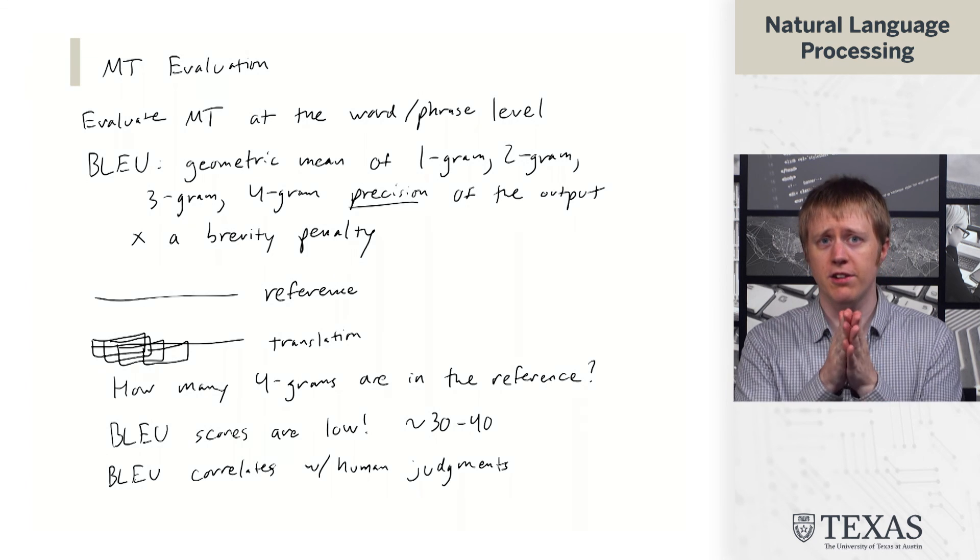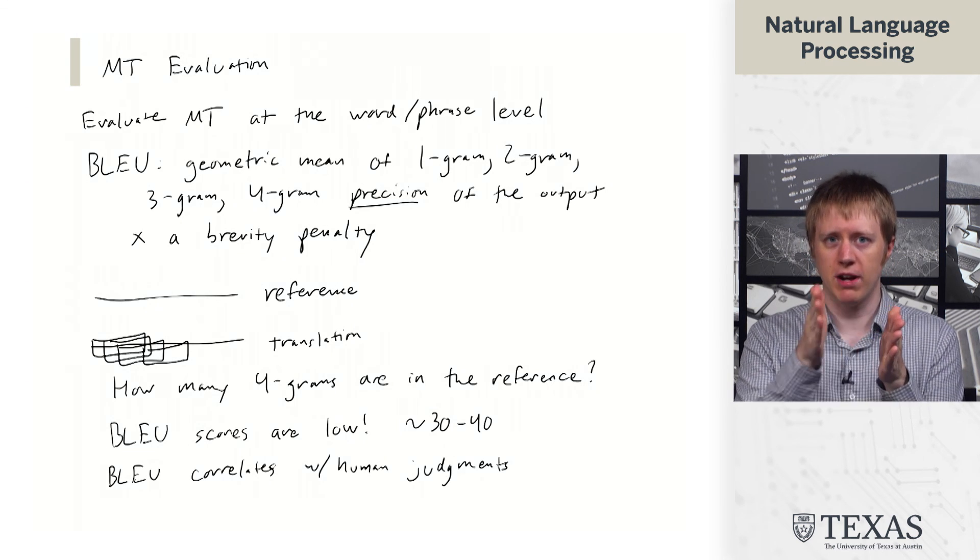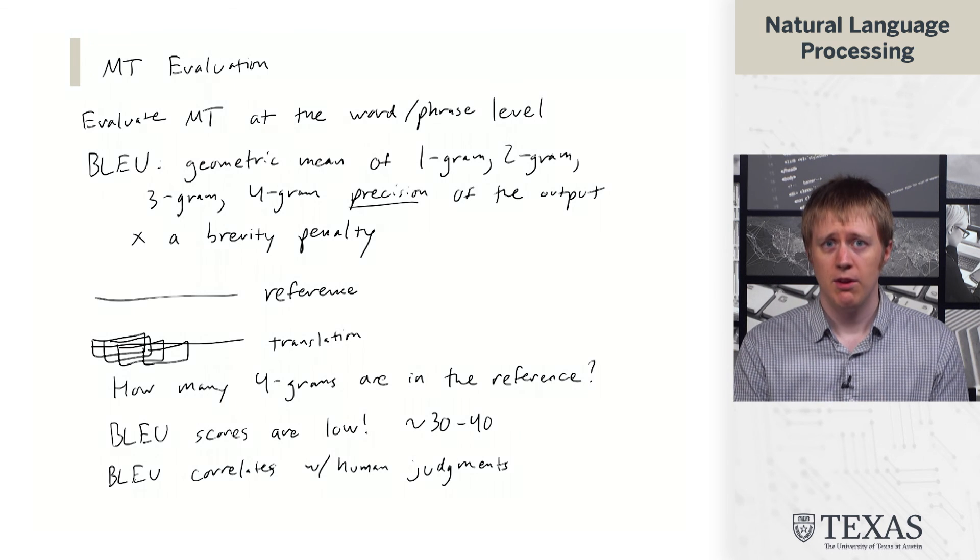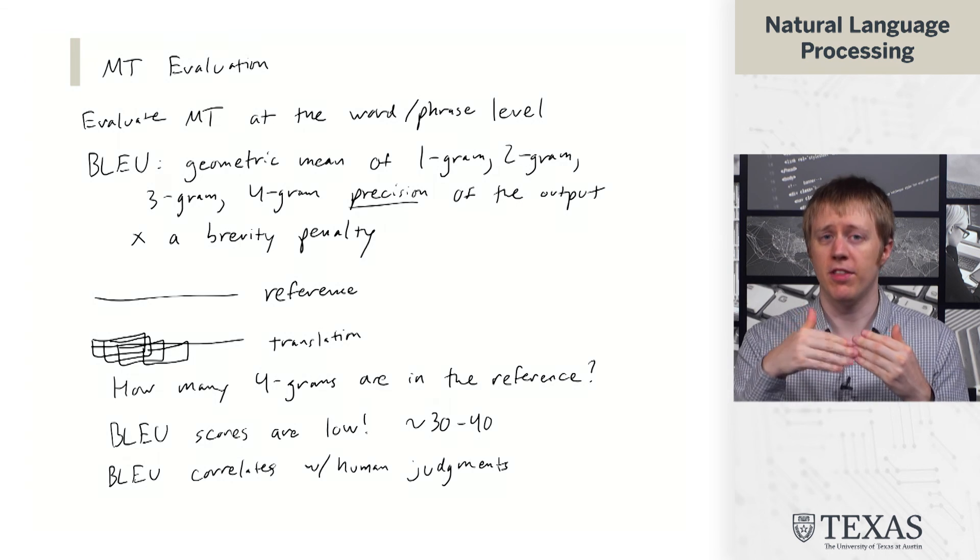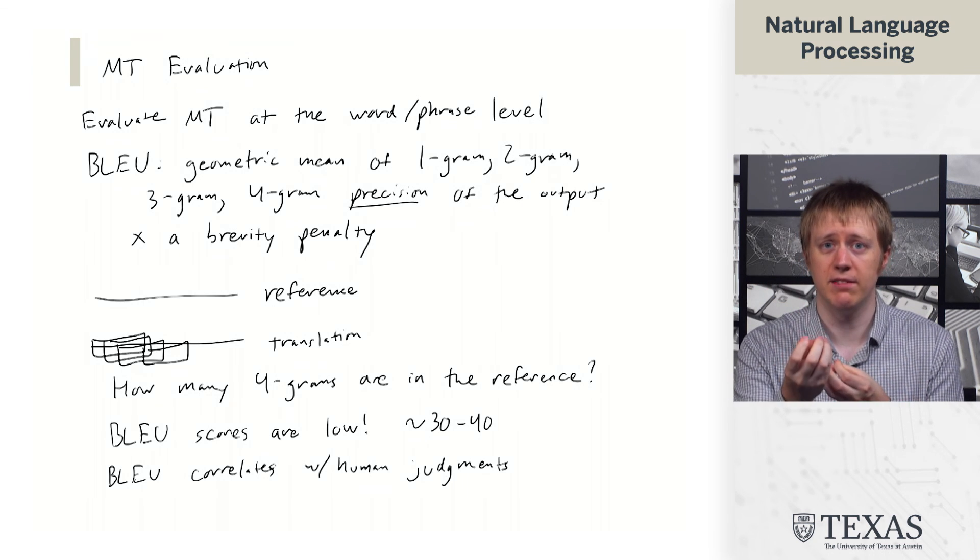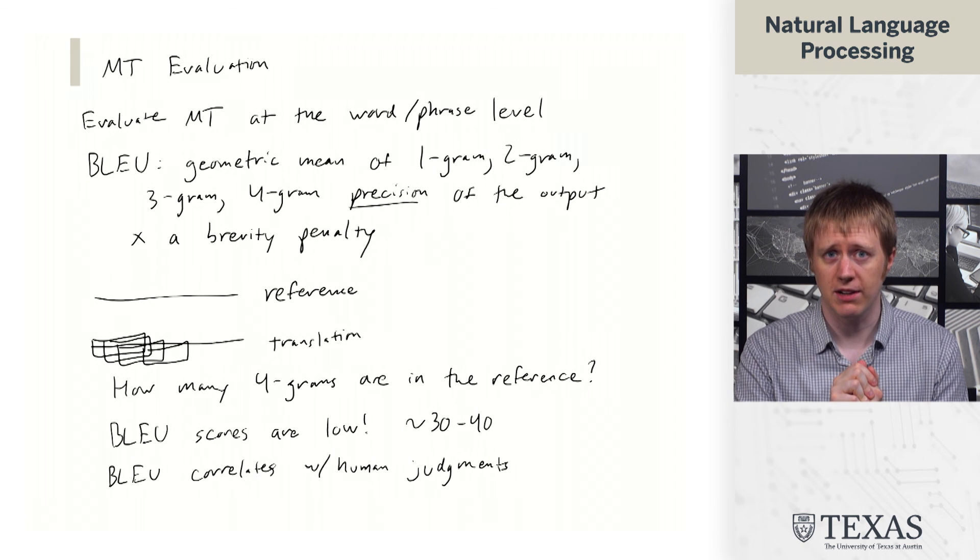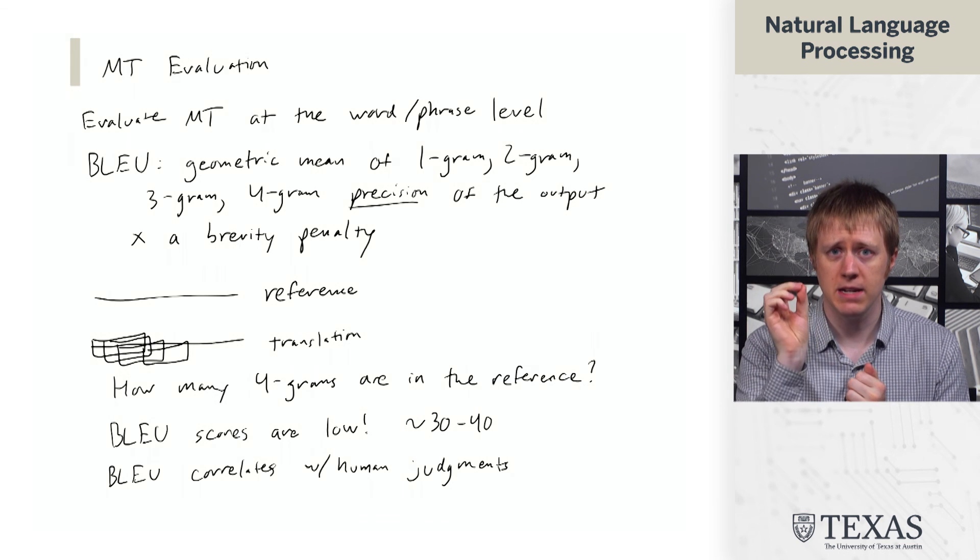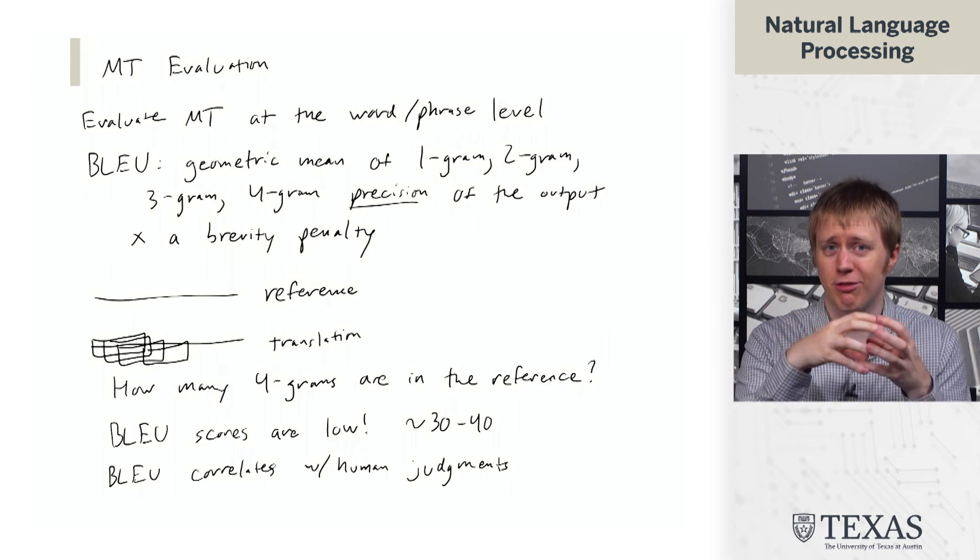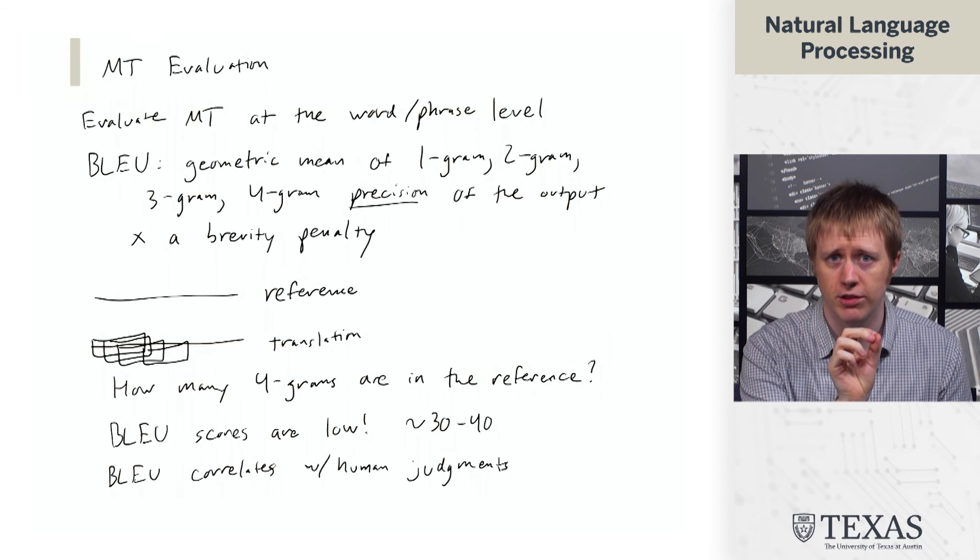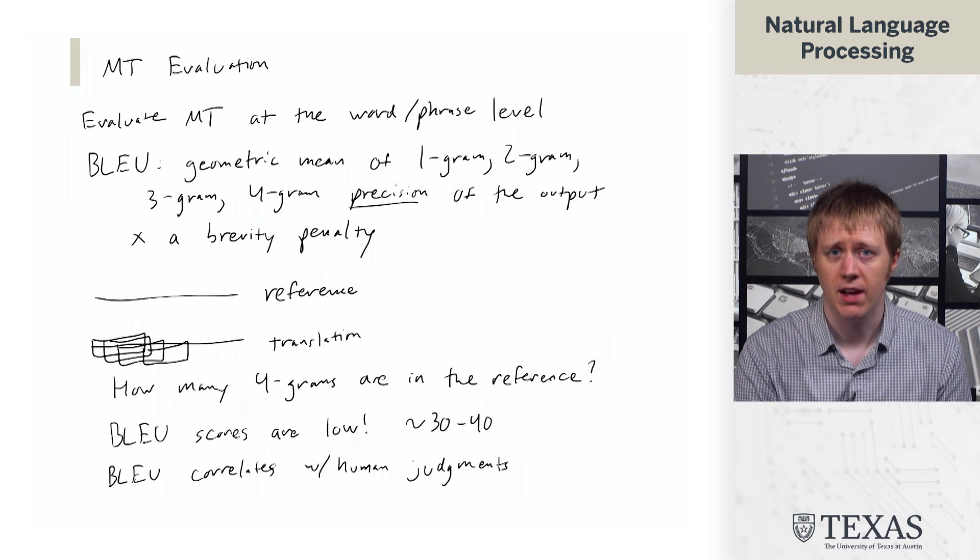So we kind of understand now that if we are able to translate a bunch of phrasal chunks fairly accurately, we might do a good job on this metric. And that will ideally let us produce things that look good to humans as well. So the question that we're going to answer going forward is how do we get the phrase-level correspondences that we're looking for? And then how do we use those in an actual translation system? That's the end of this segment.